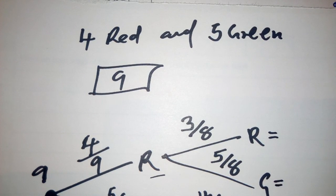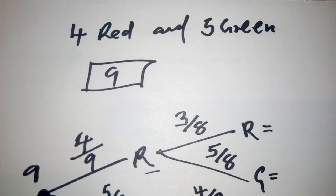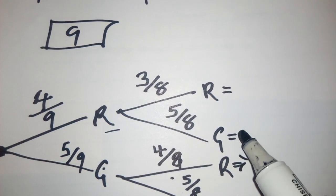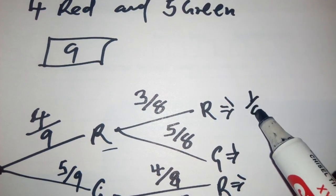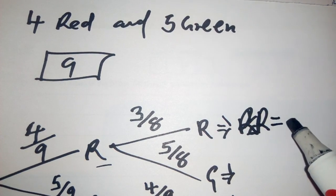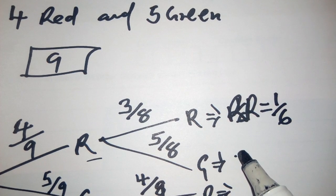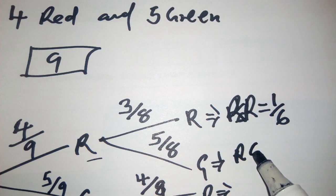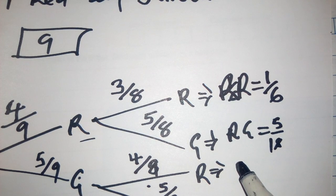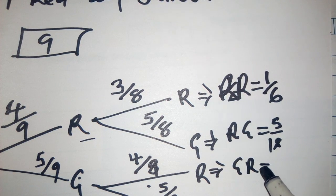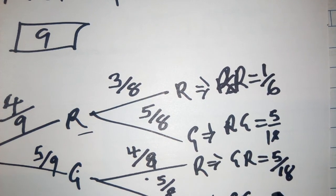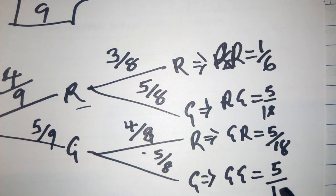Next, we can do this. I like doing this. Red, red is 1 over 6. Then red, green is 5 over 18. Then green, red is 5 over 18. Green, green is 5 over 18.